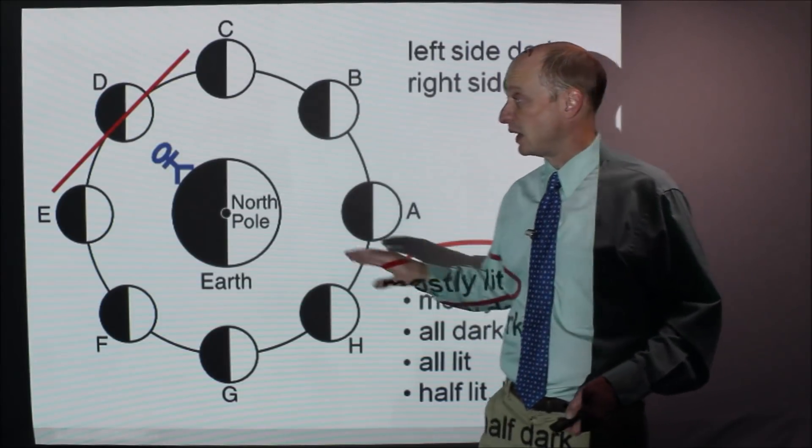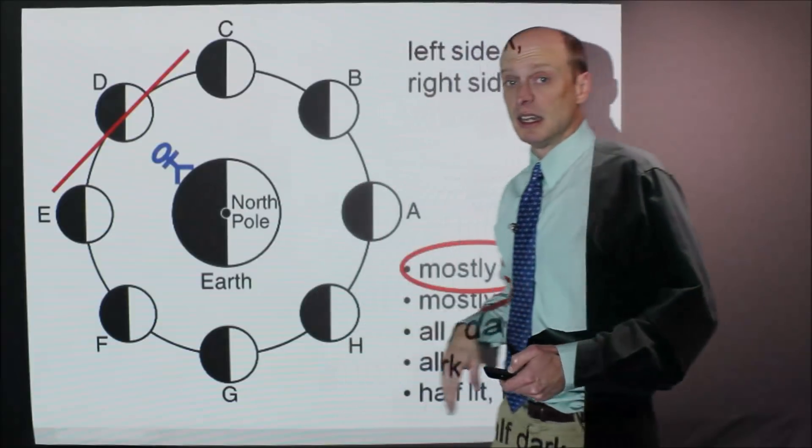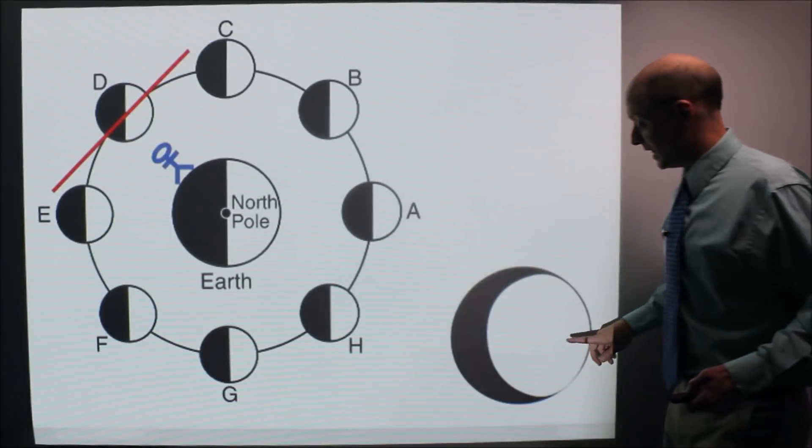Therefore, that moon phase, when it's at location D in its revolution around Earth, is going to look like this.